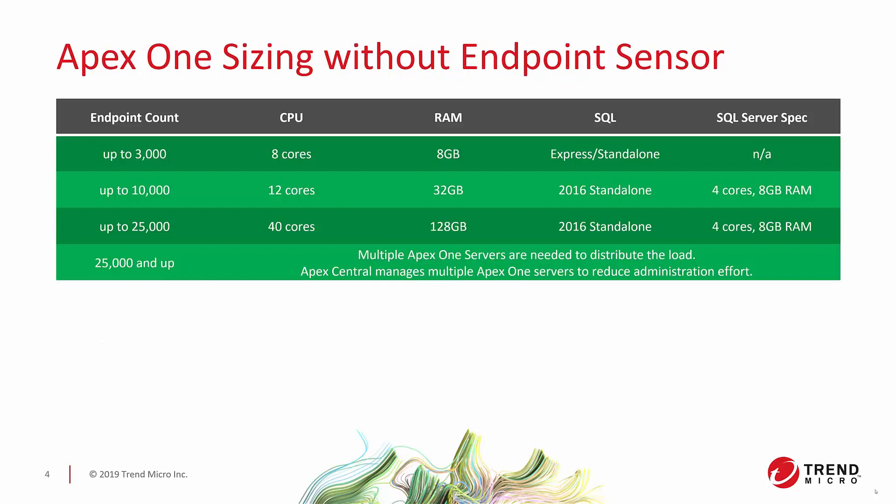Without Endpoint Sensor, the Apex One sizing guide looks like this chart. At 3,000 endpoints, you're looking at 8 cores and 8 GB of RAM with Express on the system itself. Once you start gearing up toward 10,000, you'll want to move to a standalone SQL Server, which needs 4 cores and 8 GB of RAM, while the Apex One server will need 12 cores and 32 GB of RAM.